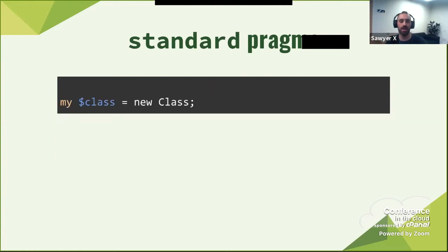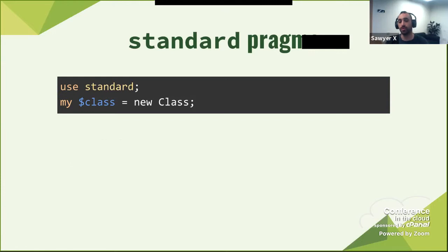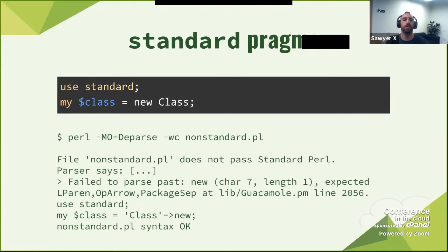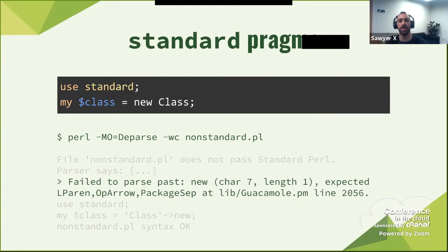Now, if you add 'use standard', you'll have a problem — it will say 'file does not pass standard Perl'. The parser will say it failed to parse past a certain point and gives you the rest. The B::Deparse stuff still works — it didn't break the program, didn't exit it. But it does tell you it didn't pass, what actually happened, where it stopped, and what it expected — which is super useful. You can see it got to 'new' and then had a problem. It will even say: after 'new', I expected one of the following things to happen.